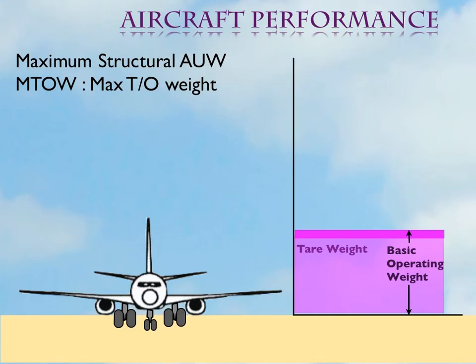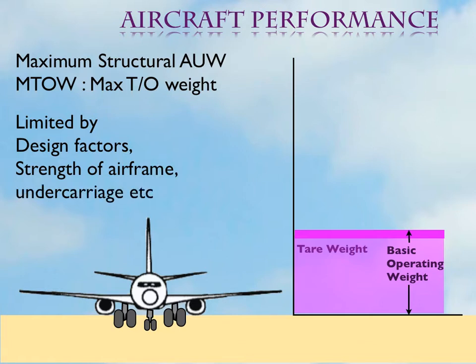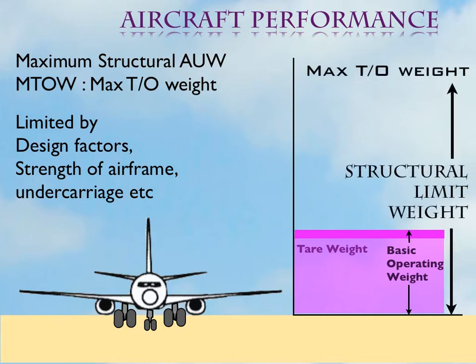Now let me introduce to you an important parameter: the maximum takeoff weight, also called the structural limit weight. As the name suggests, this is the weight which is limited by the design factors — the strength of the airframe, the strength of the undercarriage, etc. This is defined by the manufacturer. In no case can the takeoff weight exceed this defined weight. There could be other factors that will limit the takeoff weight, which we will learn about in another lesson. This is often referred to as the MTOW.